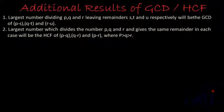We are going to read them and then talk about their proofs. The first result: the largest number dividing P, Q, and R leaving remainders S, T, and U respectively will be the GCD of P minus S, Q minus T, and R minus U.